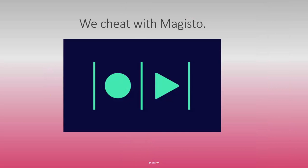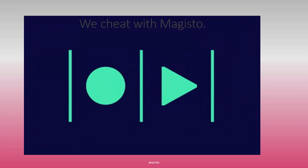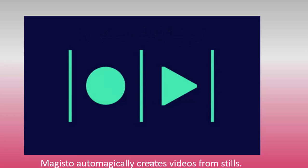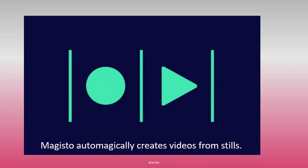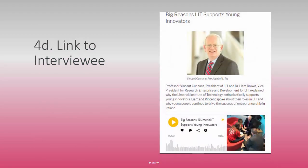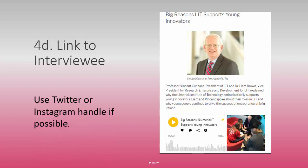Behind the scenes, we use an app called Magisto. It takes images from our gallery and automatically makes them into a video clip that can be shared as an Instagram story. Magisto automatically creates videos suitable for stories on Instagram, Facebook, and Flickr from the stills captured during an event — happens behind the scenes without our intervention. You should link to an interviewee, using their Twitter handle, Instagram handle, or URL of the company. The person you interview will be very appreciative for that.